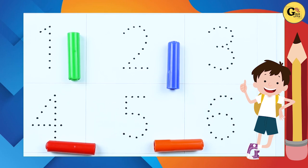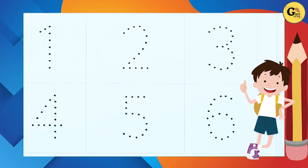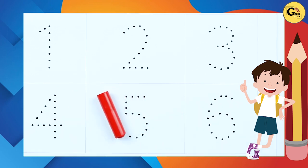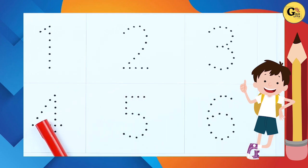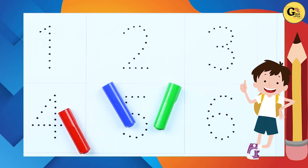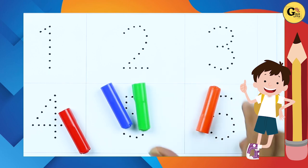Hello friends! Today we learn numbers 1 to 10 with some colors: red color, blue color, green color, orange color.